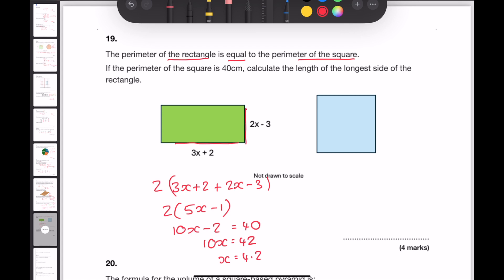The question states that I need to find the length for the longest side and the expression for the longest side is 3x plus 2. Substituting x as being 4.2 into 3x add 2 would give 3 lots of 4.2 add 2. The answer to this question is then 14.6 centimeters.